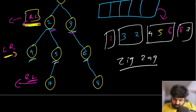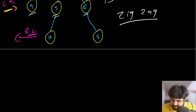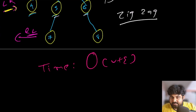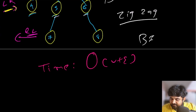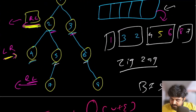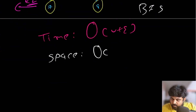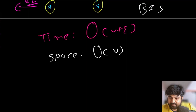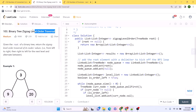The time complexity is O(V + E) — vertices plus edges — because we are using BFS. The space complexity is O(V), the number of nodes or vertices in the tree, since we use a queue. This is the complete solution.